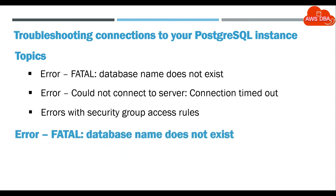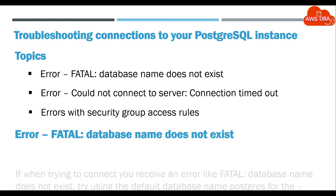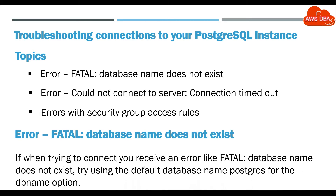Error Fatal — Database Name does not exist. If when trying to connect you receive an error like Fatal: Database Name does not exist, try using the default database name 'PostgreSQL' for the name option.